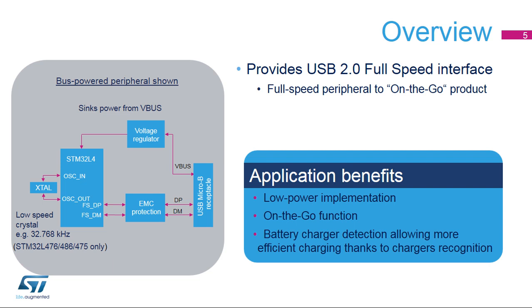This figure shows the simplest connections between an STM32L4 microcontroller and a USB connector in a peripheral configuration. The STM32L4 features a full-speed USB communication interface, allowing the microcontroller to communicate typically with a PC or a USB storage device. The simplest implementation is a USB peripheral device, but the STM32L4 also supports on-the-go USB functions. The USB implementation includes low-power features, allowing the use of a low-speed crystal oscillator.